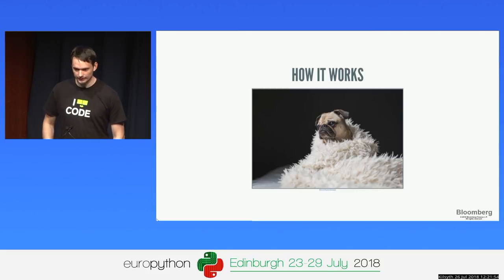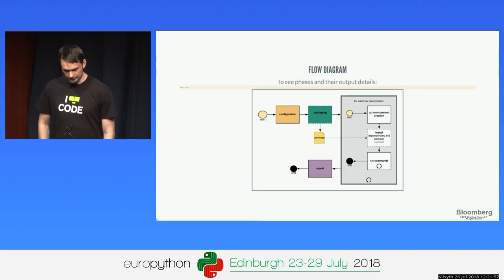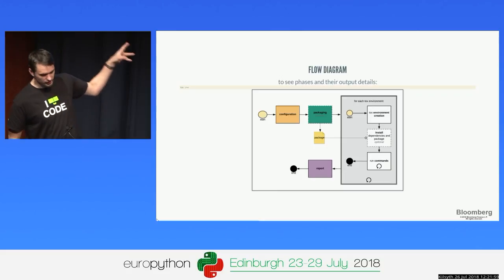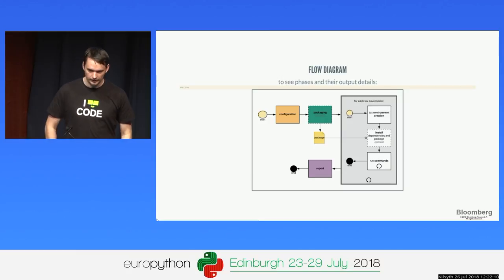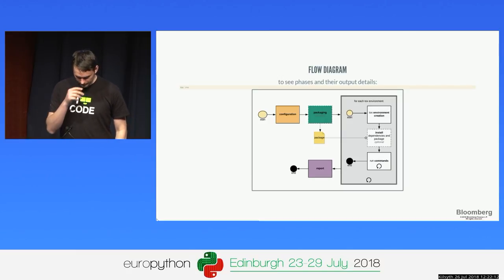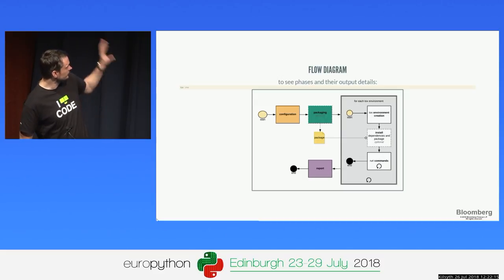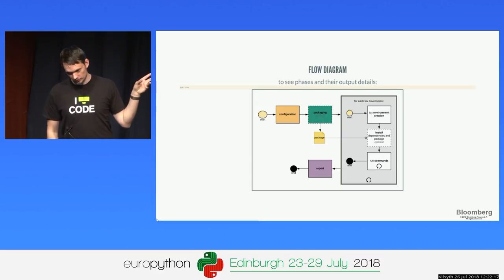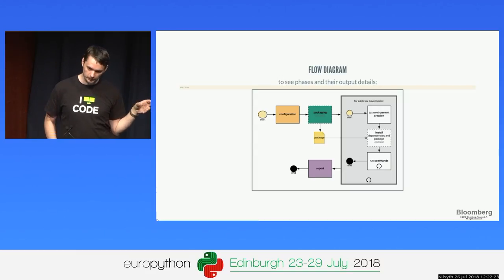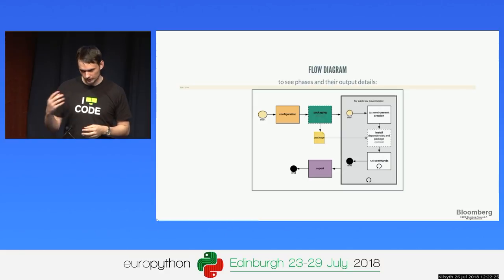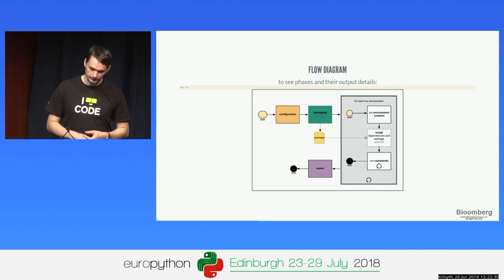This is a flow diagram showing what Tox actually does. It starts with a configuration phase, combining everything in your configuration file with command-line arguments and operating system environment variables. Then there are optional steps — packaging is optional. If you have a library, you want to test the packaged version, whatever the end user would use, not just what's on your local file system.